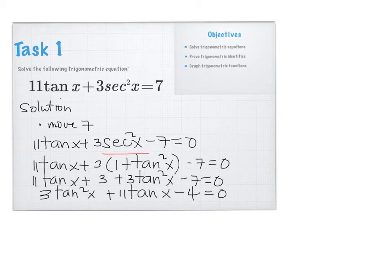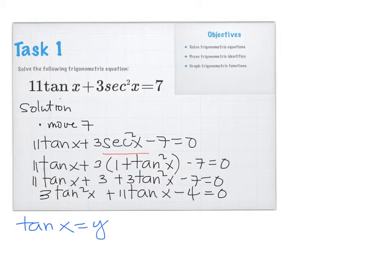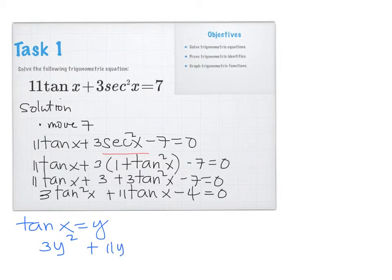Next, we represent tangent X as a certain letter to help us. If tangent X equals Y, the equation becomes 3Y squared plus 11Y minus 4 equals 0.